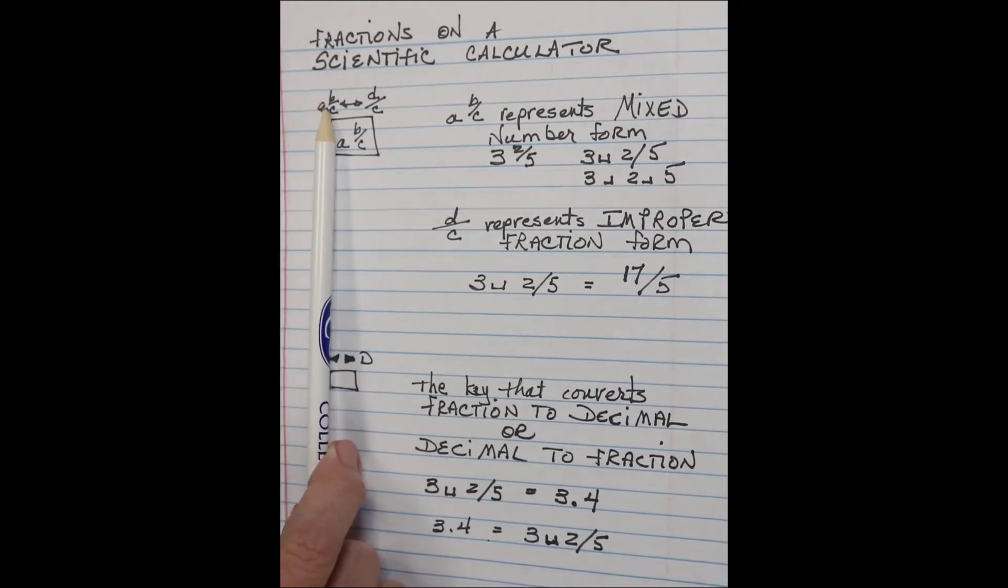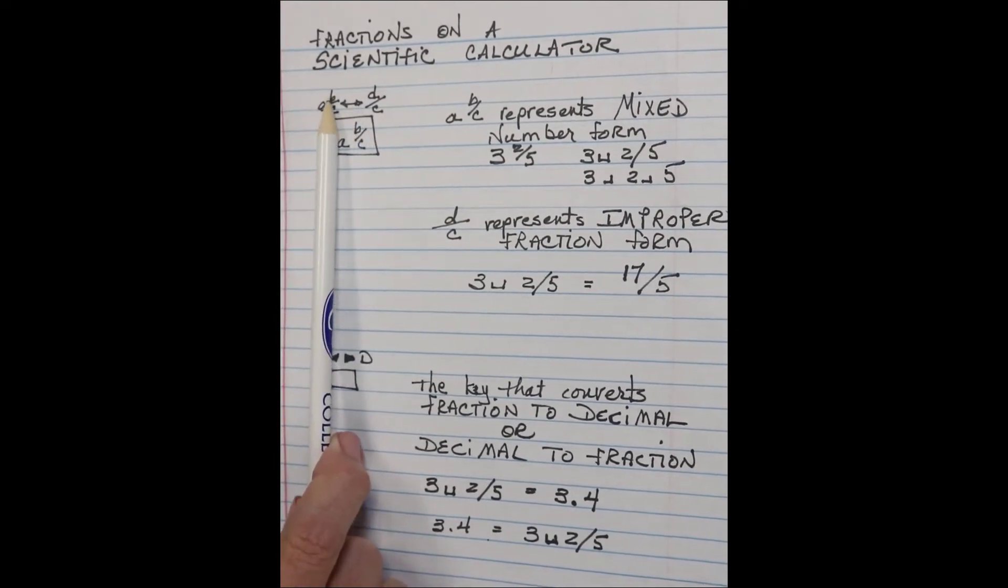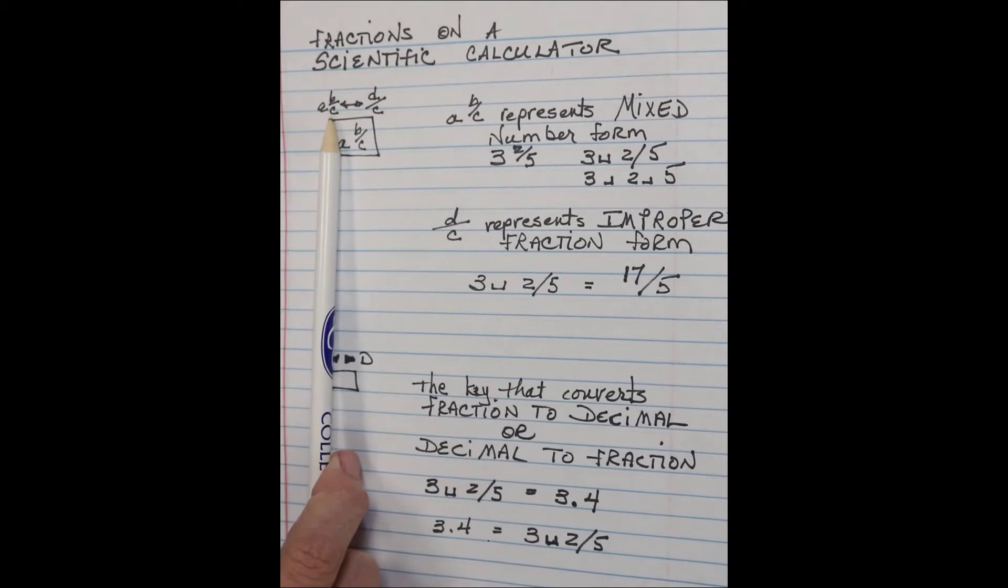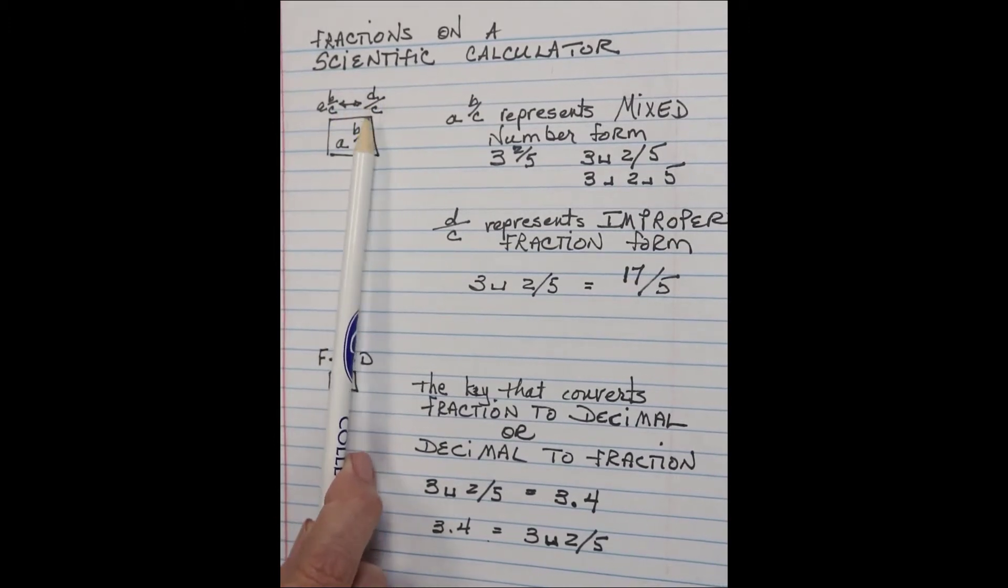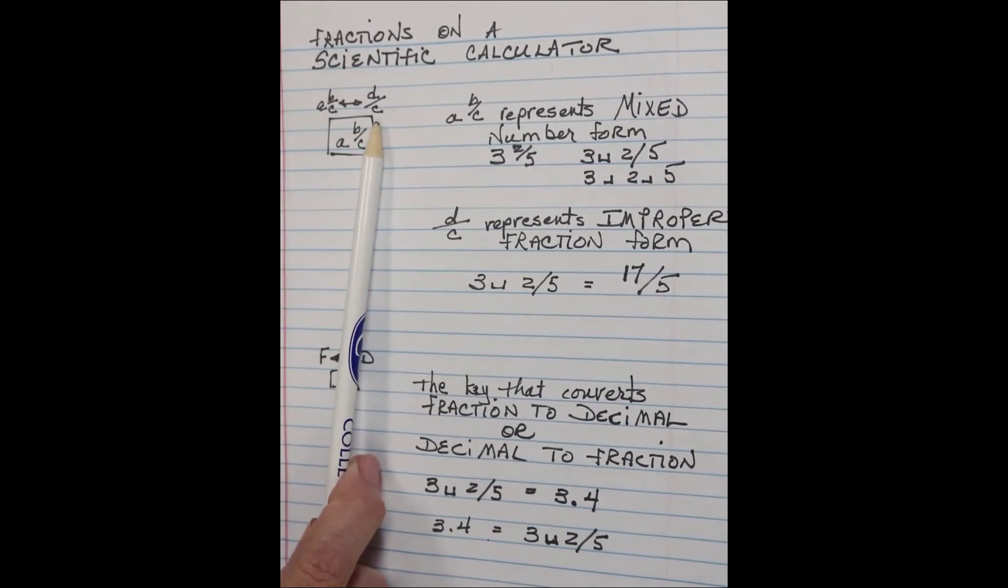Above this key you're going to see a double arrow that has the mixed number form ABC, and you're going to be able to convert that to the improper form, which is what this D over C represents.